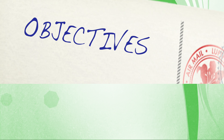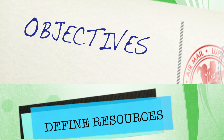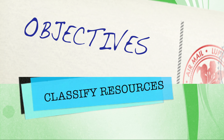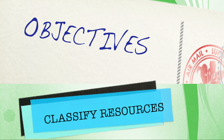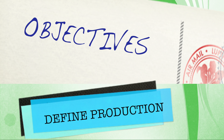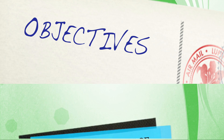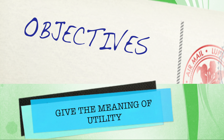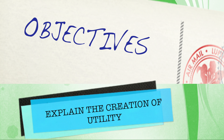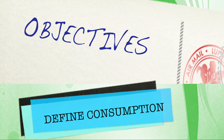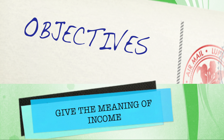Let us look at the objectives first. At the end of the lesson, you should be able to define resources, classify resources, define production, explain the factors of production, give the meaning of utility, explain the creation of utility, define consumption, and give the meaning of income.